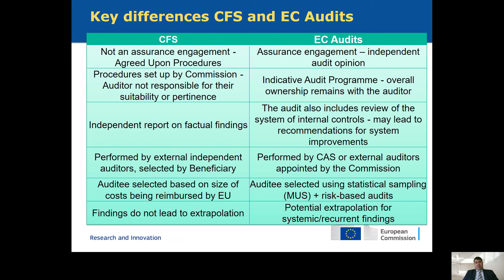EC audits can be performed by the commission itself or by external audit firms appointed by the commission, while the CFS is performed by auditors selected by the beneficiary. The selection method also differs: for EC audits a monetary unit sampling method is used topped off with a risk-based selection, while for the CFS a certificate is required when the threshold is reached. Due to these differences, the CFS doesn't lead to extrapolation while EC audits may lead to extrapolation of systemic and recurrent findings.